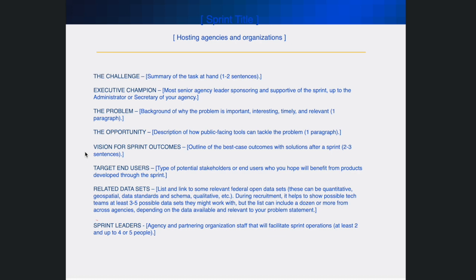You will also need to write a paragraph about why the problem statement is important, interesting, timely, and relevant. Next, you will describe how public-facing tools can tackle the problem and outline the best-case outcomes with solutions after the sprint. You will also describe the potential stakeholders or end users who you hope will utilize and benefit from products developed through the sprint. Last, you will include relevant federal open data sets and information about the facilitation team.